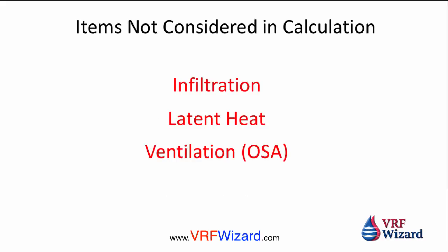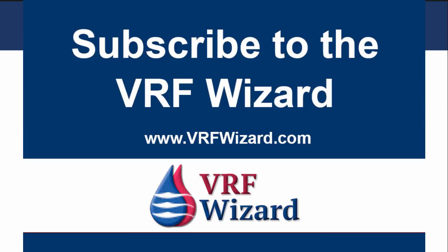Two things we did not consider: infiltration — air that sneaks in from outdoors — which is a very small number, larger in older buildings; and latent heat. People give off latent heat, and outside air ventilation is required for occupant health — we didn't consider that here. The coil will take care of the latent heat; the CFM handles the sensible heat. Please click and subscribe and look forward to our next video.